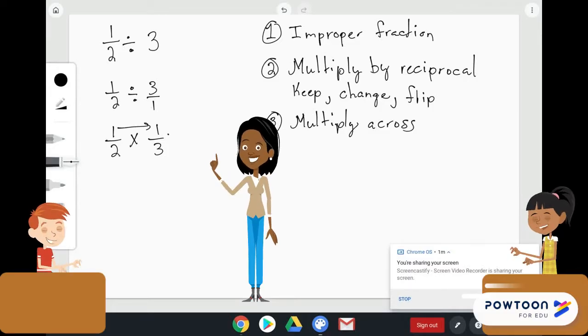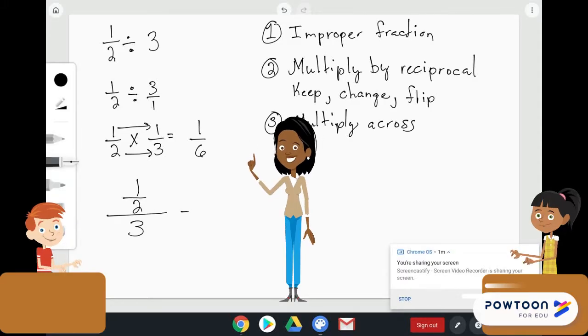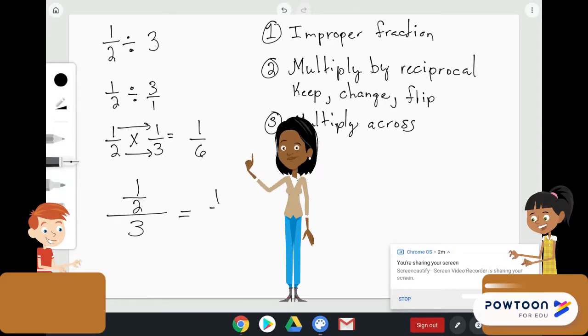So, 1 times 1 is equal to 1. And 2 times 3 is equal to 6. Therefore, our complex fraction, 1 half divided by 3 is just equal to 1 sixth.